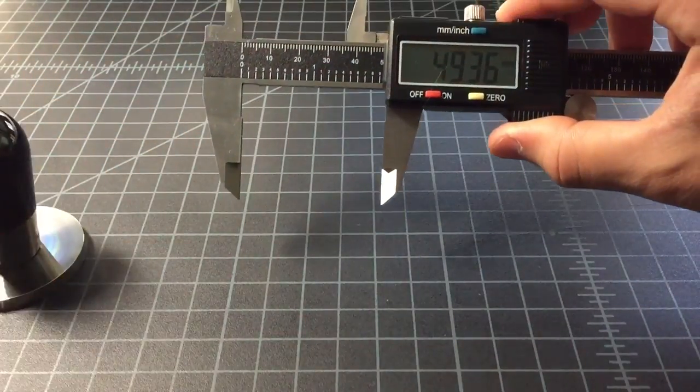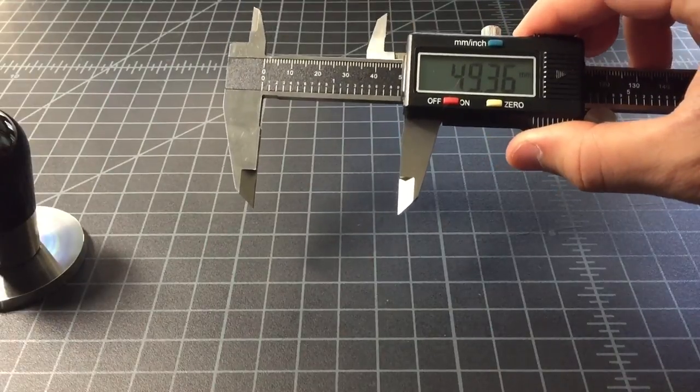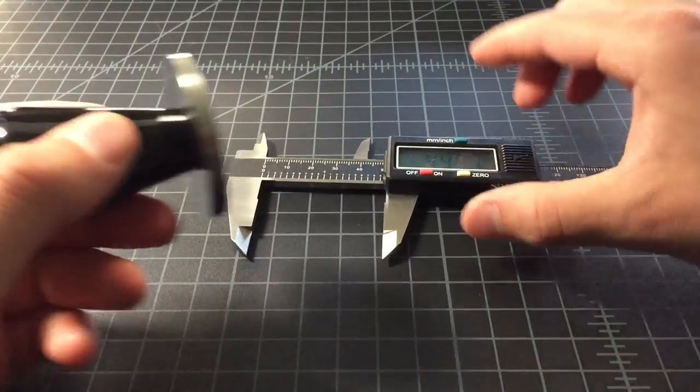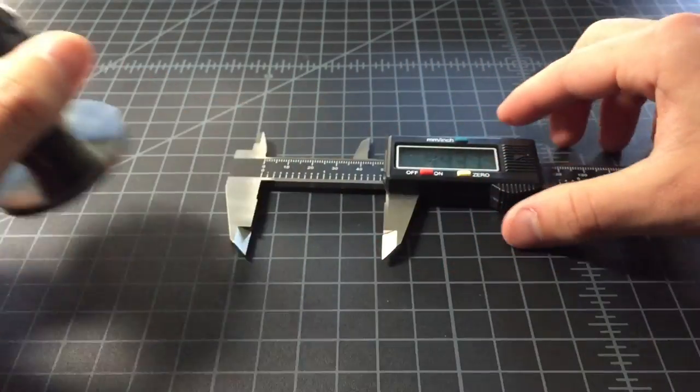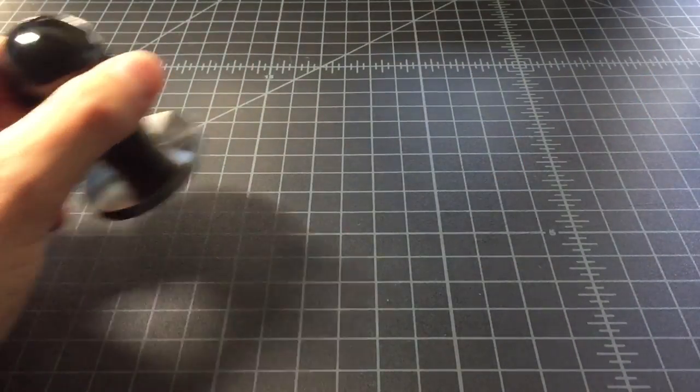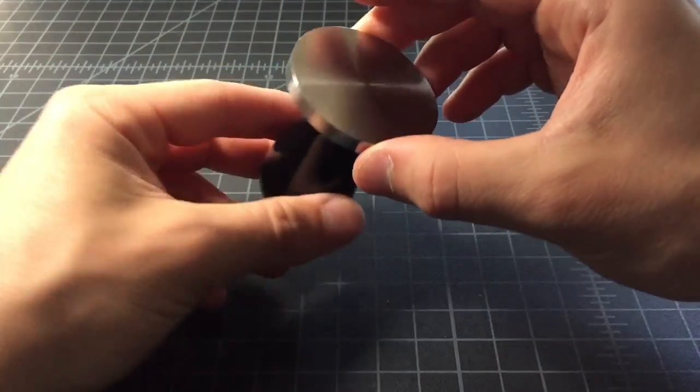We're at 49.36. So, I think that's pretty spot on. And it didn't move at all when I spun it. So, very circular. That's nice. So, accurate. Good accuracy and good precision there.